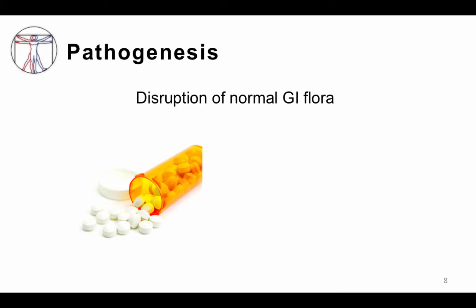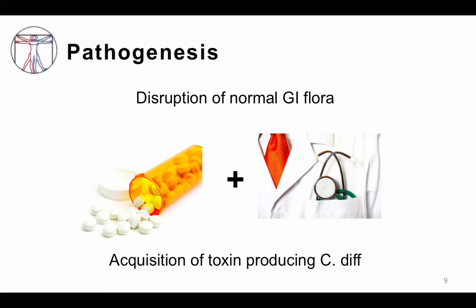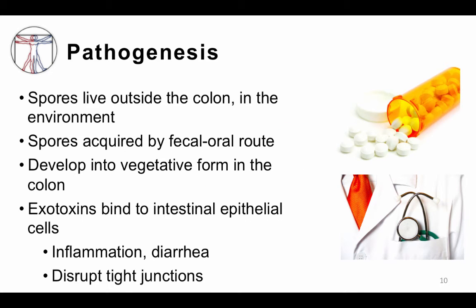How does C. diff infection occur? There are essentially two major events in the pathogenesis of C. diff infection. The first is the disruption of GI flora, and the second is acquisition of a toxin-producing strain. Some strains do not produce toxins and may actually be normal colonizers of the colon. The most common scenario is that your GI flora is disrupted, usually due to antibiotic use. Spores live in the environment and are resistant to heat, antibiotics, and acid, and are quite difficult to kill. C. diff spores are acquired via the fecal-oral route and develop into a vegetative or active form once in the colon. This has implications when we talk about infection control precautions later on. Importantly, this organism itself is not invasive, and non-toxin-producing strains can be normal colonizers in a small percent of people.